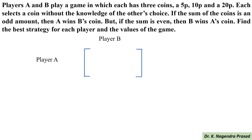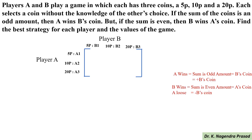Player A has 3 strategies: A1, A2, and A3, which are the 5 pies, 10 pies, and 20 pies coins. Similarly, player B also has 3 strategies: B1, B2, and B3, which are the 5 pies, 10 pies, and 25 pies coins. If the sum is odd, A wins B's coin; if even, B wins A's coin. We will draw the payoff matrix based on this condition.